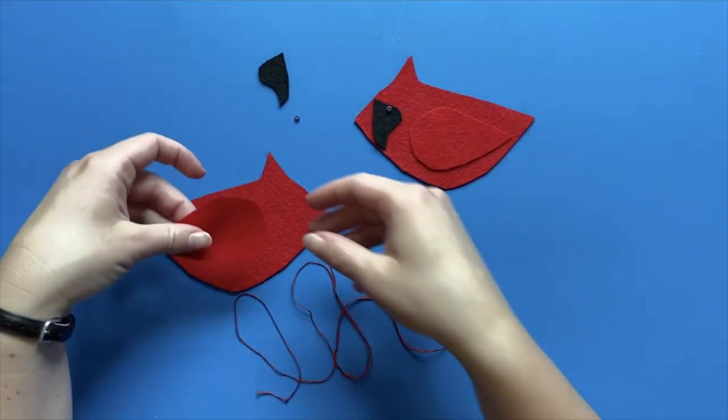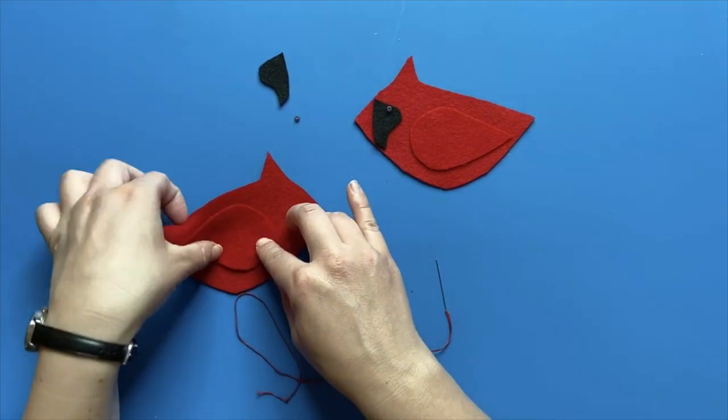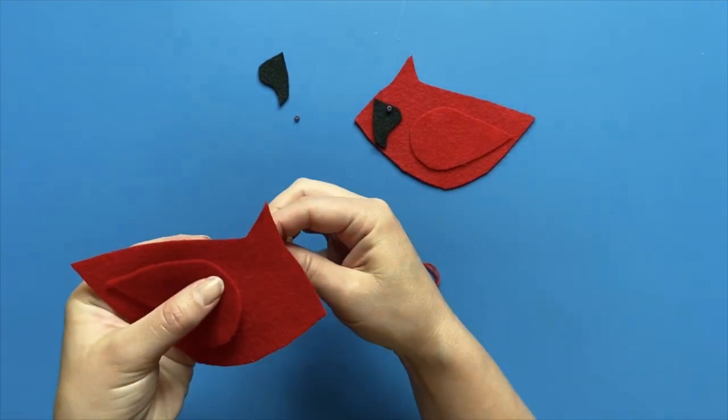Then, begin to stitch your wing onto the body. Notice how the two bird bodies and wings are mirror images of each other.